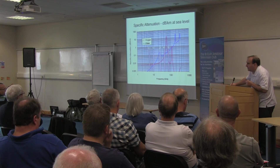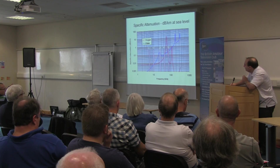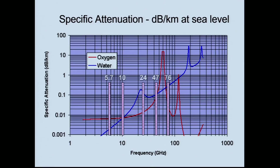The attenuation goes up as the bands go up, but because of these resonances, it's not always smoothly increasing. The 24 gigahertz band, for example, which is very close to one of the water resonance frequencies, has a very high loss — about 0.2 dB per kilometre under standard conditions. It's not that high, but if you've got a 100-kilometre path, you're losing 20 dB, and that starts to be a problem.